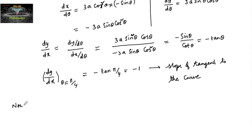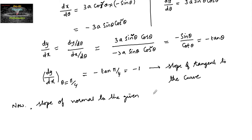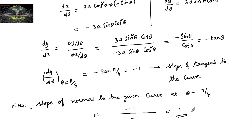Now, slope of the normal to the given curve at theta equal to pi by 4 is equal to minus 1 upon the slope of the tangent, that is minus 1 upon negative 1, so we get 1. Therefore, the slope of the normal to the given curve at theta equal to pi by 4 is 1.